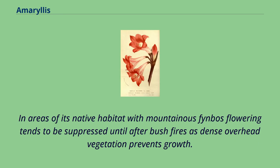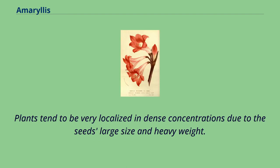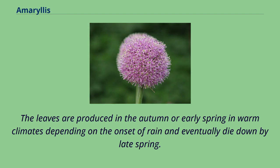In areas of its native habitat with mountainous fynbos, flowering tends to be suppressed until after bushfires, as dense overhead vegetation prevents growth. In more open sandy areas of the Western Cape, the plant flowers annually. Plants tend to be very localized in dense concentrations due to the seeds' large size and heavy weight. Strong winds shake loose the seeds, which fall to the ground and immediately start to germinate, aided by the first winter rains. The leaves are produced in the autumn or early spring in warm climates depending on the onset of rain, and eventually die down by late spring.